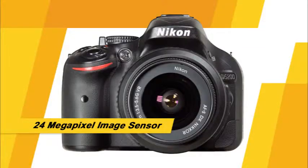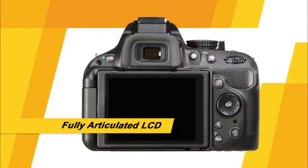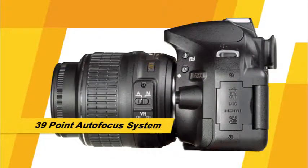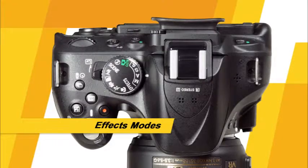The D5200 has an impressive 24 megapixel image sensor, a fully articulated LCD screen, a 39-point autofocus system, effects modes, an HDR setting, and many other great features and functions that we'll discuss in this guide. Let's get started.